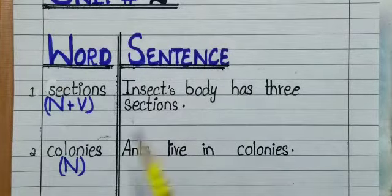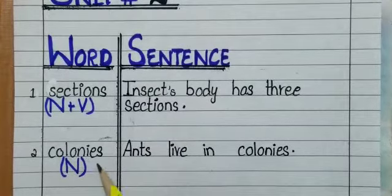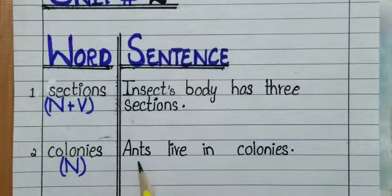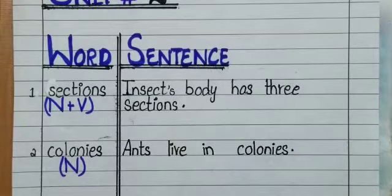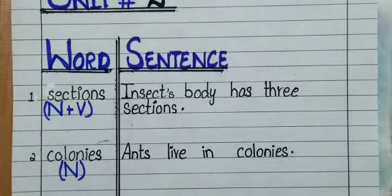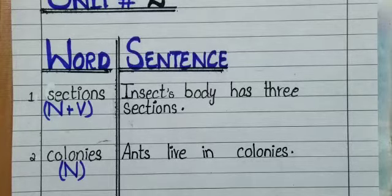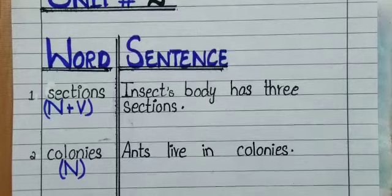Now come to the second word: 'colonies' — C-O-L-O-N-I-E-S. It is a noun. The sentence for colonies is: 'Ants live in colonies.' You can also use colonies in different sentences — for example: 'The government of Pakistan established many colonies.' Or: 'We live in a new colony. I love my colony because the environment is very good.' You can use it in different ways.